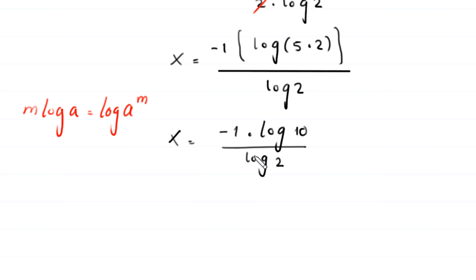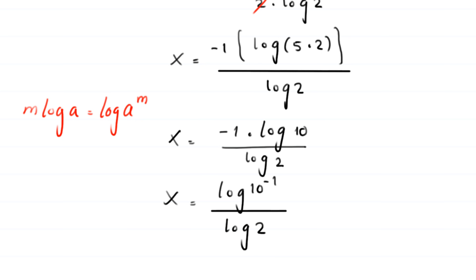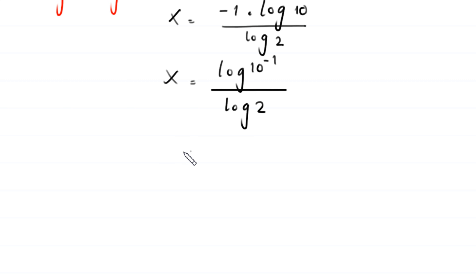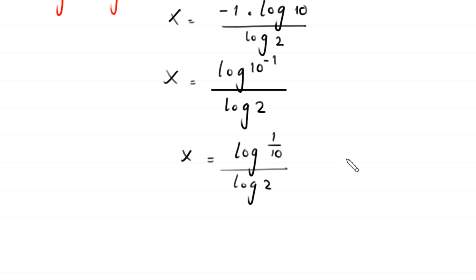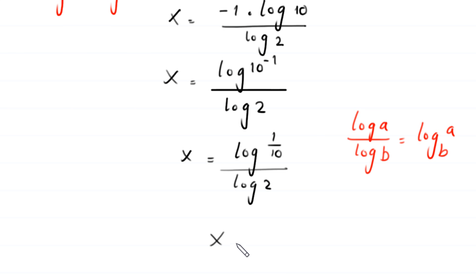Using the property log of a to the power m, this expression becomes x equals log of 10 to the power negative 1, divided by log of 2. Since 10 to the power negative 1 is 1 over 10, and by the change of base property log of a over log of b equals log base b of a, this becomes x equals log base 2 of 1 over 10. This is the second solution.